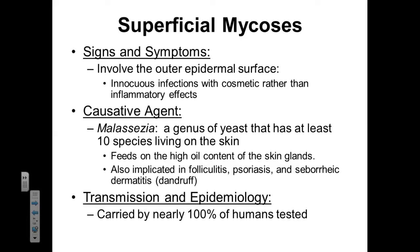There is also a general category of superficial mycoses — superficial fungi that infect our skin — and these are going to infect the outer surface of our epidermis. These infections typically have cosmetic implications as opposed to serious medical effects. One of these agents is Malassezia, a genus of yeast with ten different species within it that feeds on the high oil content of the sebaceous glands of our skin. It's been implicated with folliculitis, psoriasis, and seborrheic dermatitis — also known as dandruff. Nearly everyone contains active living cultures of these fungi, and autoimmune disorders have been implicated in the development of these diseases as that fungi becomes out of balance with the normal biota of our skin.